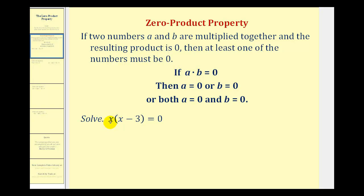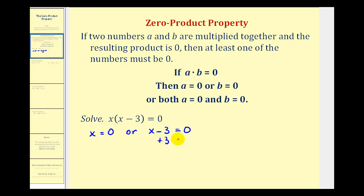If we want to solve the equation x times the quantity x minus three equals zero, because this product is equal to zero, either the first factor of x must equal zero, or the second factor of x minus three must equal zero. So we know one solution is x equals zero. For the second solution we solve x minus three equals zero by adding three to both sides, so our second solution is x equals positive three.